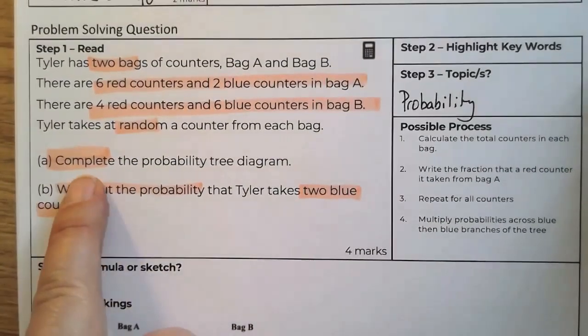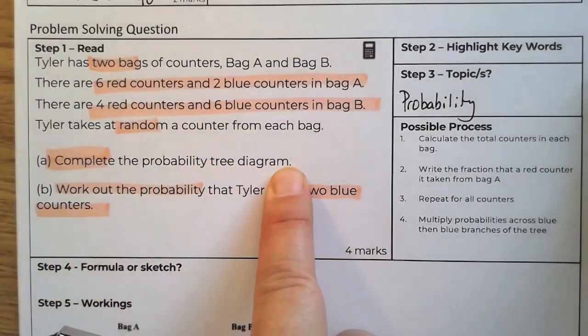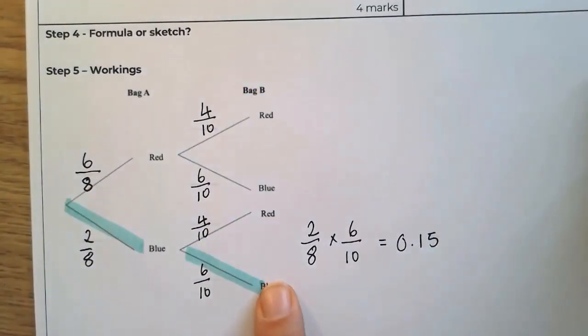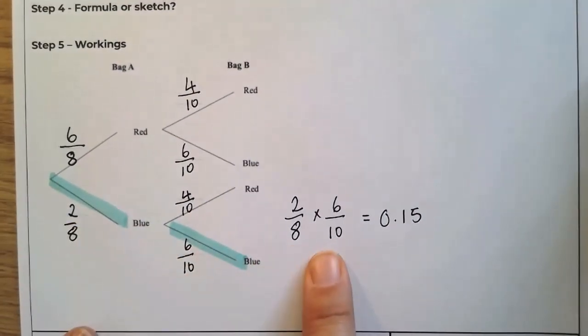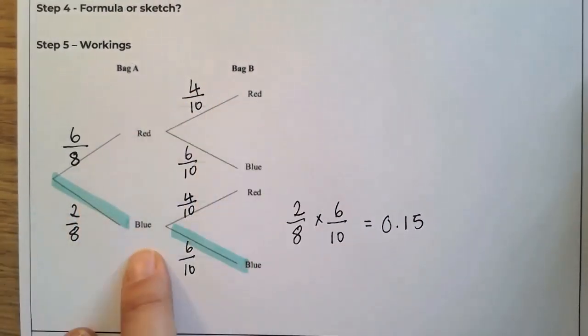Looking at the breakdown, you'd actually get two marks for completing the probability tree diagram, which is this. And then you get another two for knowing that you had to multiply those together. So four marks for not a lot of workings. You just need to know what to do.